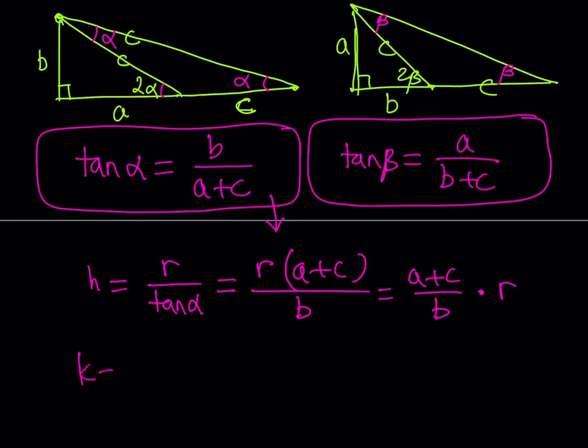Remember, k was written as r over tangent beta. If you divide r by tangent beta, which is a over b plus c, you're going to get r times b plus c over a, which can be written as b plus c over a multiplied by r. Beautiful.